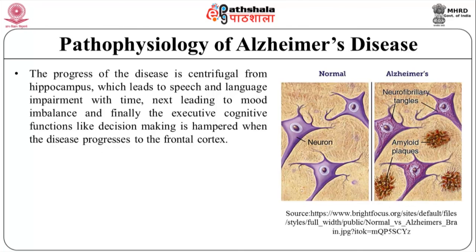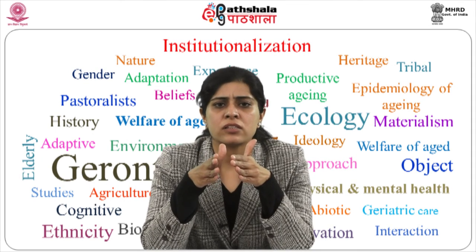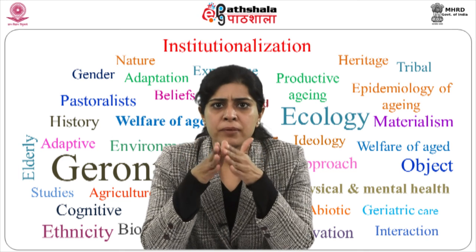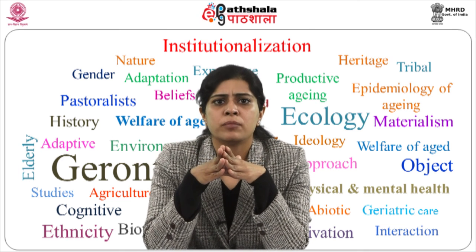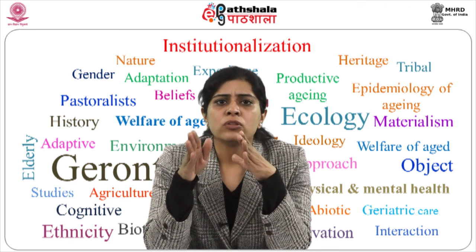The causes of the disease are not completely understood. However, there are few major players often cited. The neural degeneration is caused by pathological features characterized in Alzheimer's disease — these are the amyloid plaques and neurofibrillary tangles. Both are clearly visible by microscopy in the brains of those having Alzheimer's disease. Amyloid plaques are extracellular clusters of beta-amyloid peptides. These plaque depositions are considered to be the main culprit in causing a cascading effect of neurodegeneration.